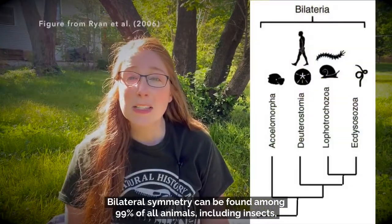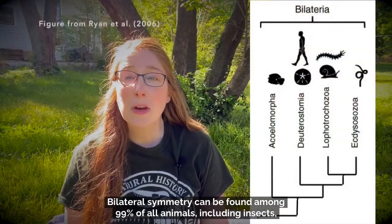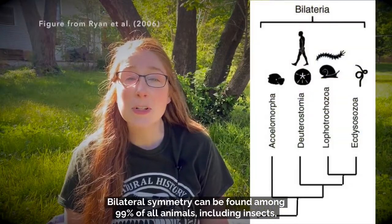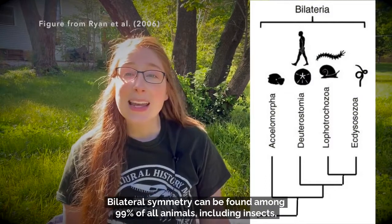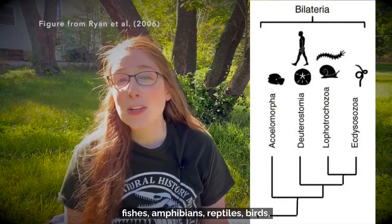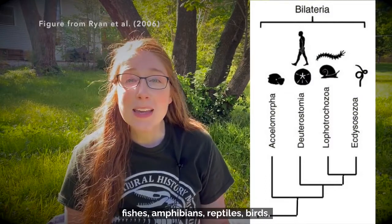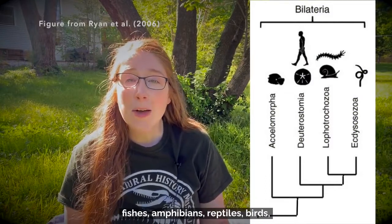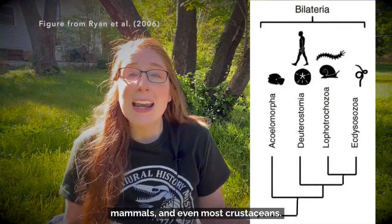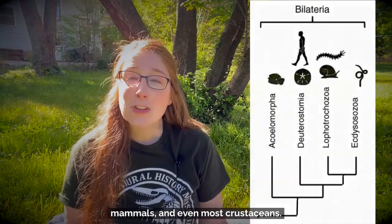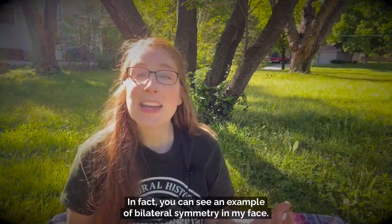Bilateral symmetry can be found among 99% of all animals, including insects, fishes, amphibians, reptiles, birds, mammals, and even most crustaceans.